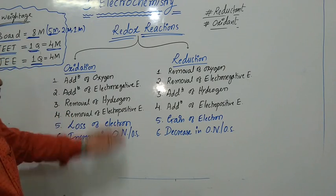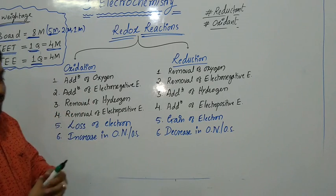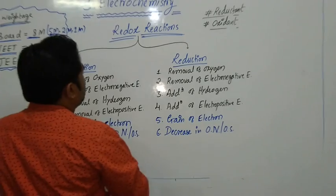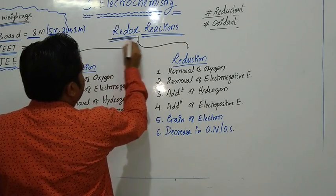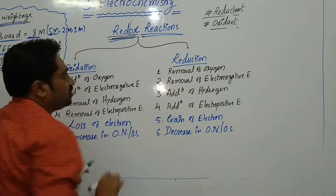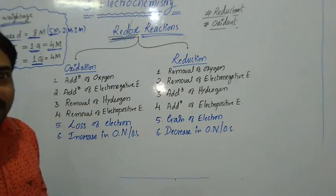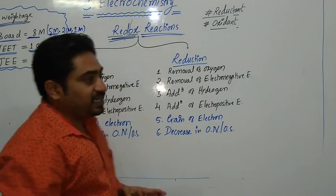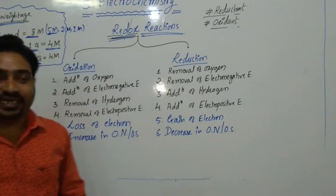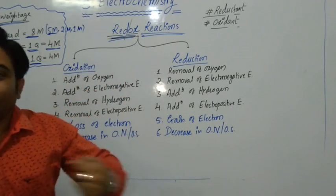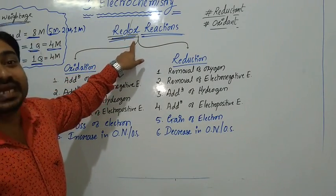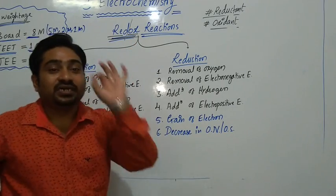Once again I will redefine redox reaction. Redox reaction is a combination of two words: reduction and oxidation. A redox reaction is a chemical reaction in which reduction and oxidation take place simultaneously. That is called a redox reaction.